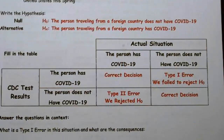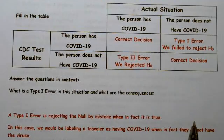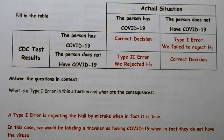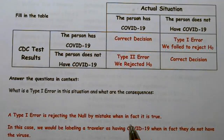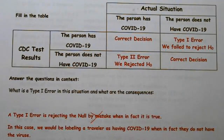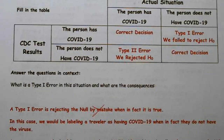So what is a Type 1 error in this context? I always recommend defining what it is first, because that shows you know what you're talking about. A Type 1 error is rejecting the null when in fact it's true. In this case, we would be labeling a traveler as having COVID-19 when in fact they do not have the virus.